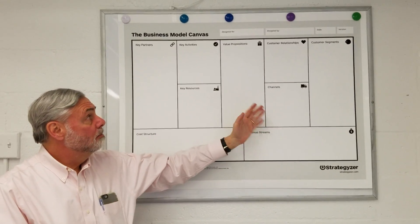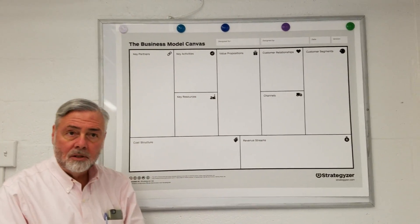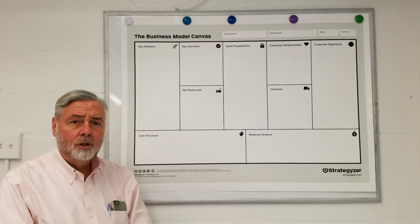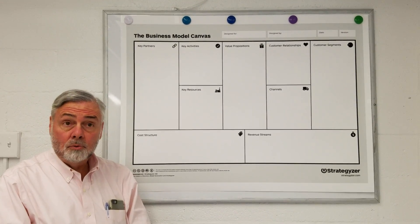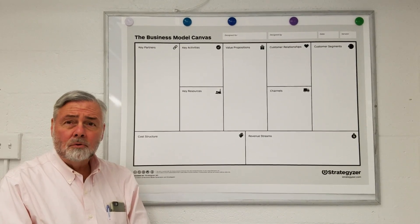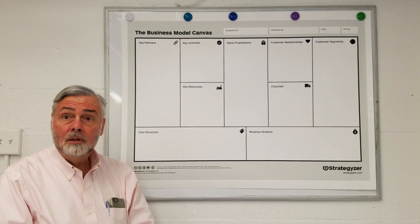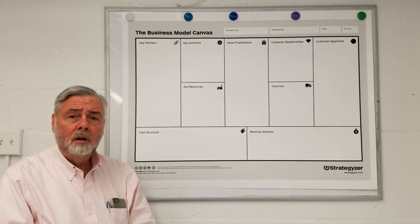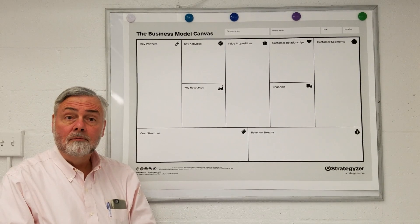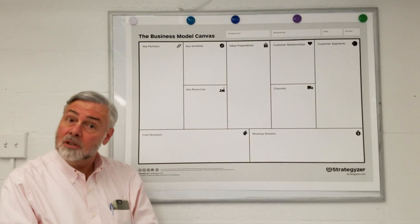The two elements that are the most important are value proposition and customer segments. Those are foundational, so you want to really work hard to get those right. If you don't have those right and they change out from under you, you're going to waste some time in your venture. My strong advice is to work hard on getting those two elements of the business model canvas correct.